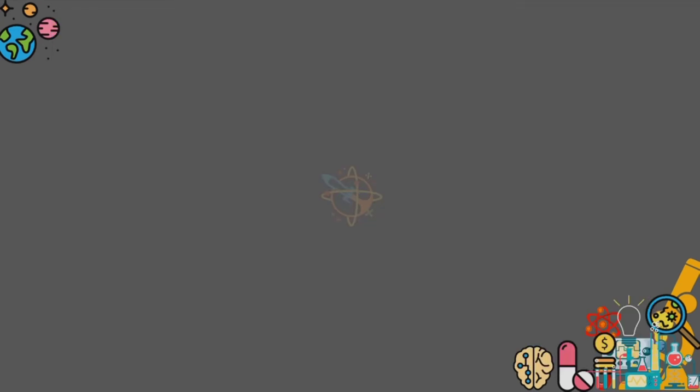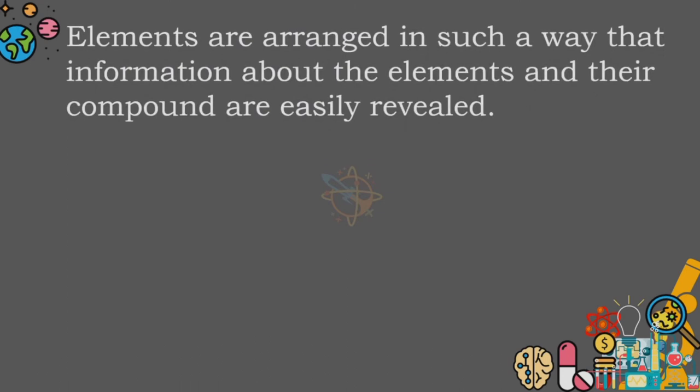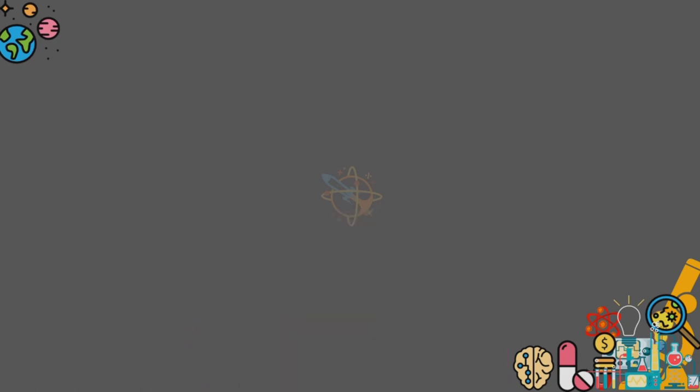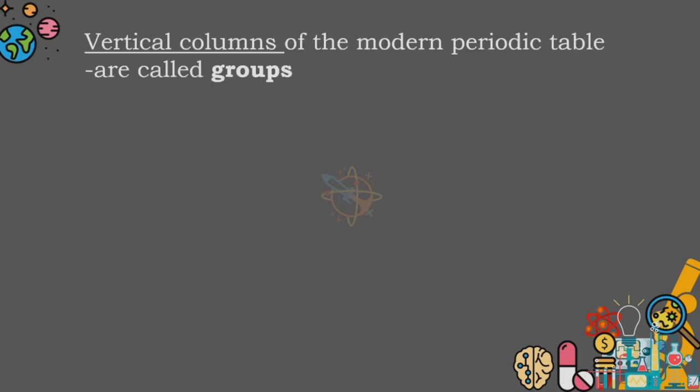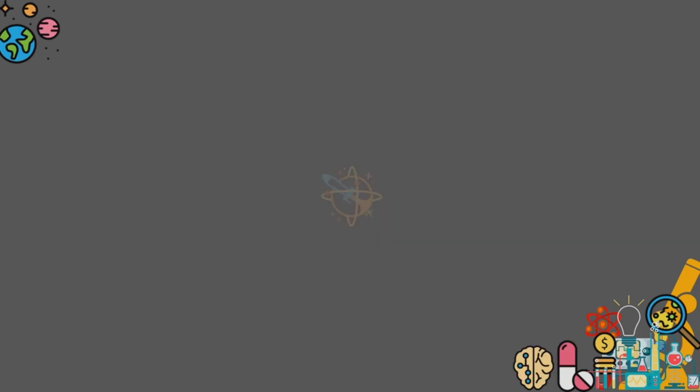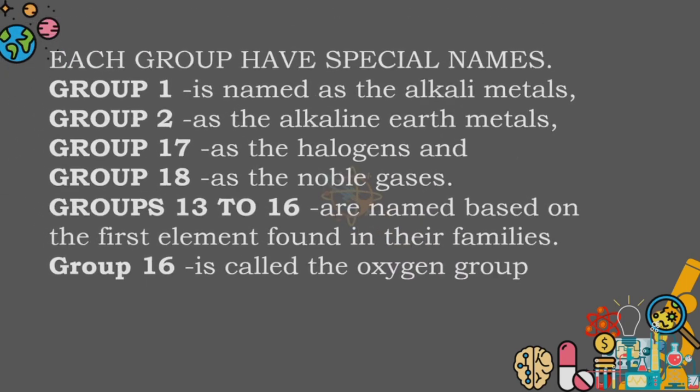Elements are arranged in such a way that information about the elements and their compounds are easily revealed. The vertical columns of the modern periodic table are called groups, as they are in Mendeleev's table. The modern periodic table has many more groups with 18, compared with just eight in Mendeleev's table. Groups identify the principal families of elements.